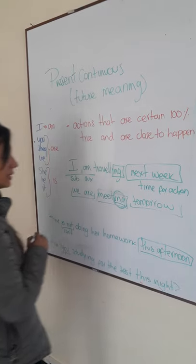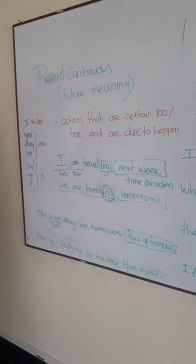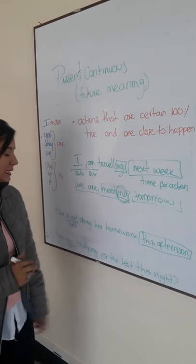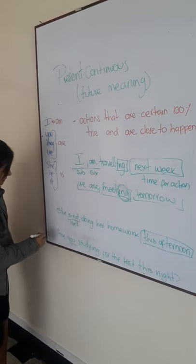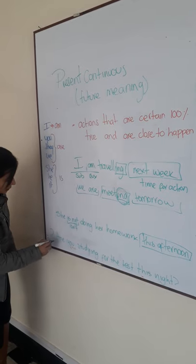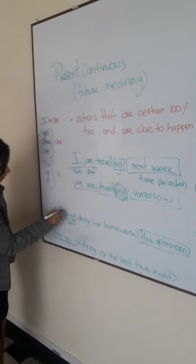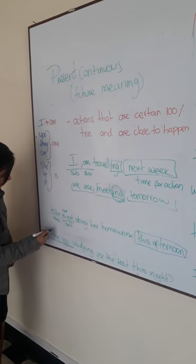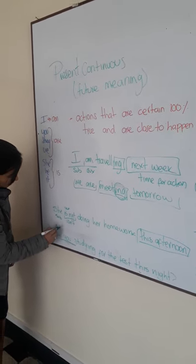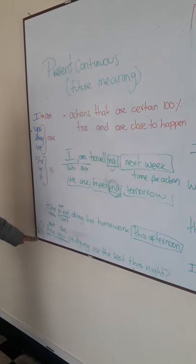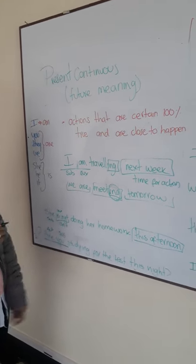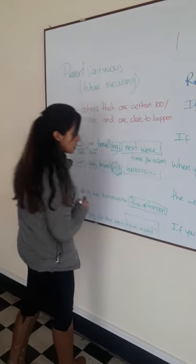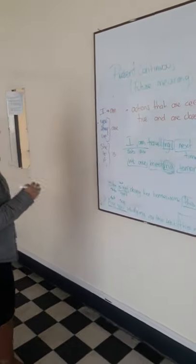It is important to mention the time, to be clear about what we are using in the future. And if you come with a graph, are you starting to process this line? As I told you, it is important to mention when the action will happen.